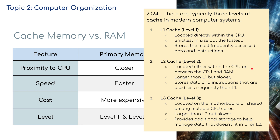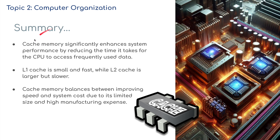In summary, cache memory significantly enhances system performance by reducing the time it takes for the CPU to access frequently used data. Level 1 cache is small and fast, while level 2 cache is larger but slower. Cache memory balances improving speed against system cost due to its limited size and high manufacturing expense.